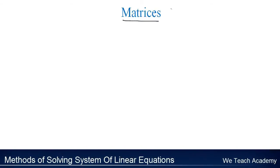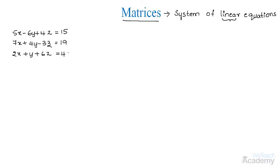Hello guys, this is Mayuri from VDG Academy. In this presentation, under matrices, we are going to discuss some methods of solving systems of linear equations. First, let us understand the term linear. Consider a few equations — all these are called linear equations as they have the same degree 1 for different variables x, y, z. An equation individually is termed a linear equation, whereas collectively it is called a system of linear equations.